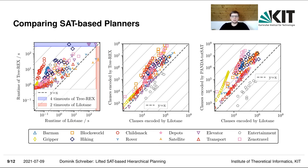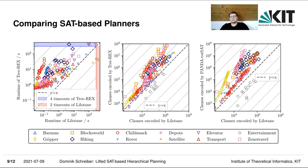In the central diagram, we see the clauses encoded by Lilutane versus those encoded by TreeRex. On the right-hand side, we see the same comparison but against Panda-Totzat, another TO-HTN planner. We can see that for many domains, Lilutane finds a smaller formula by one order of magnitude or even more. There are some domains, like ChildSnack, where we can see a polynomial difference in the encoding size.